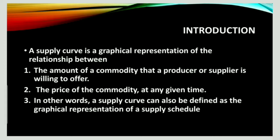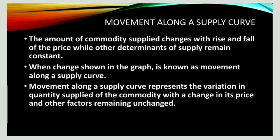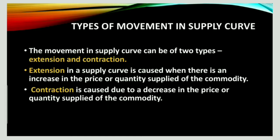The supply curve gives a graphical representation. It demonstrates the quantity willingness of the supplier to supply in the market at a prevailing price at a given time under market circumstances. Movement along the supply curve reflects changes in quantity supplied with the rise and fall of price, while other determinant factors remain constant. This market movement in the supply curve has two types.